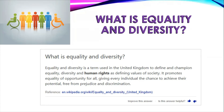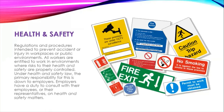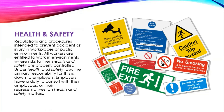The protected characteristics also include age, gender, nationality, disability, and pregnancy and marital status. Health and safety refers to regulations and procedures intended to prevent accidents or injury within workplaces or public environments. All workers are entitled to work in environments where risks to their health and safety are properly controlled. Under health and safety law, the primary responsibility for this is down to the employers. Employers have a duty to consult with their employees or their representatives on health and safety matters.